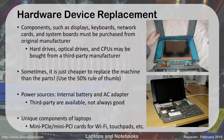Hardware device replacement: components such as displays, keyboards, network cards, and system boards should be purchased from the original manufacturer — so if you have an HP laptop, go to HP. Other things like hard drives, CD-ROM drives, optical drives, and CPUs, you can buy from anybody. You don't have to buy an HP hard drive — you can go buy a Samsung hard drive and it'll work similarly.